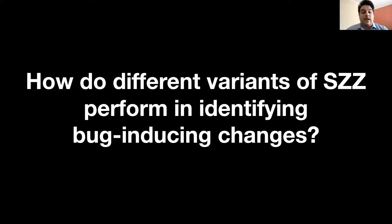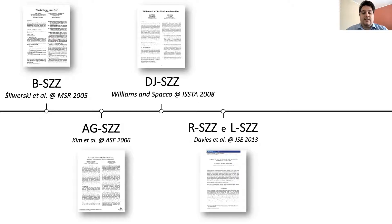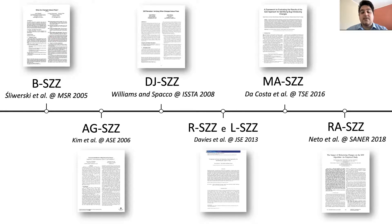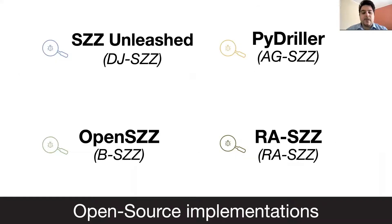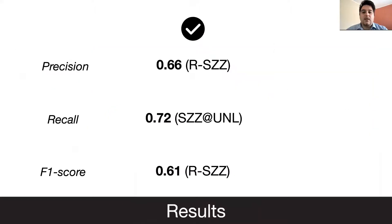After this, we want to understand how the different variants of SZZ perform in identifying bug-inducing changes. To achieve this, we considered the SZZ variants present in the literature, starting from the first version, B-SZZ. Then, in the next years, different filters on the commits were introduced, and the most recent version is R-A-SZZ, which can filter out refactoring commits for the Java language. Also, we considered some open source implementations publicly available. In our experimentation, we considered the steps starting from the bug-fixing commit to the bug-inducing commit individuation.